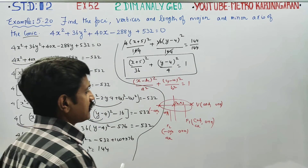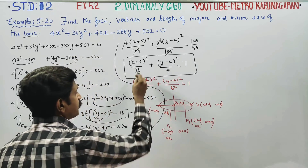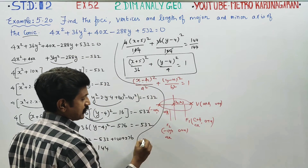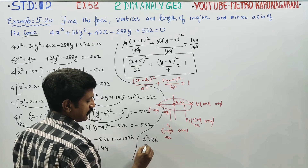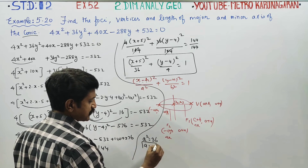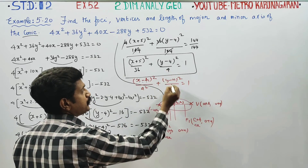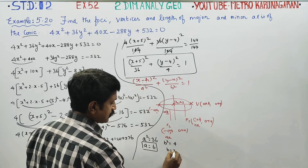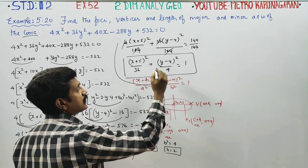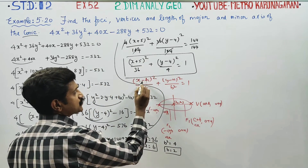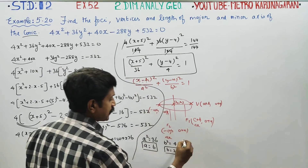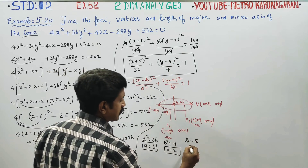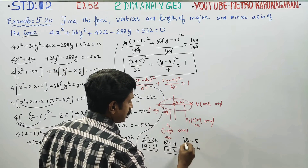Comparing with the standard form: a² = 36, so a = 6. b² = 4, so b = 2. For the center, h = −5 and k = 4. These are our key parameter values.